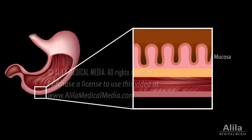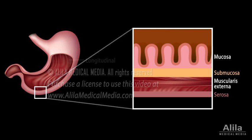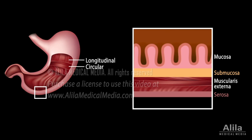The wall of the stomach consists of four layers: mucosa, submucosa, a muscle layer called muscularis externa, and serosa. The muscularis externa has three sublayers: outer longitudinal, middle circular, and inner oblique muscle. The oblique muscle is unique to the stomach as compared to other digestive organs, and it enables the churning motions required for mechanical digestion.